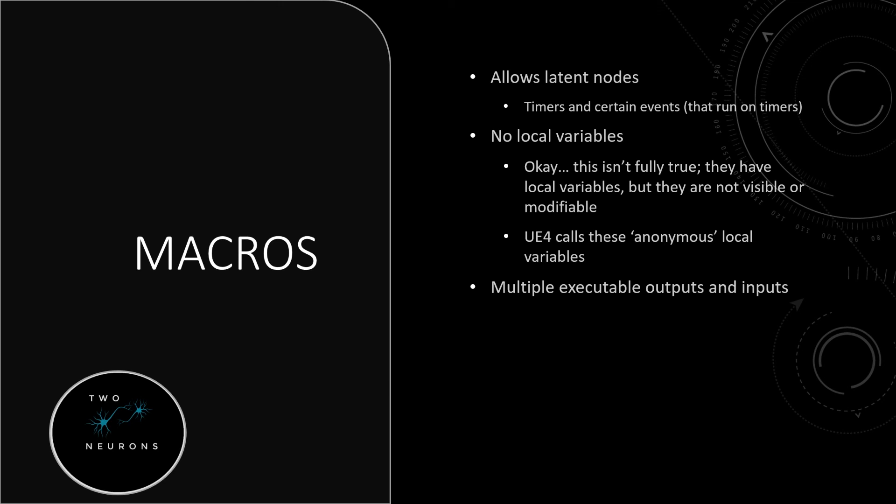Another key difference is that macros can have multiple executable outputs and inputs — those little white triangles at the top. You can have more than one of these in a macro. In the inventory section and the equipment section of the tutorial, we're going to use this to our advantage.